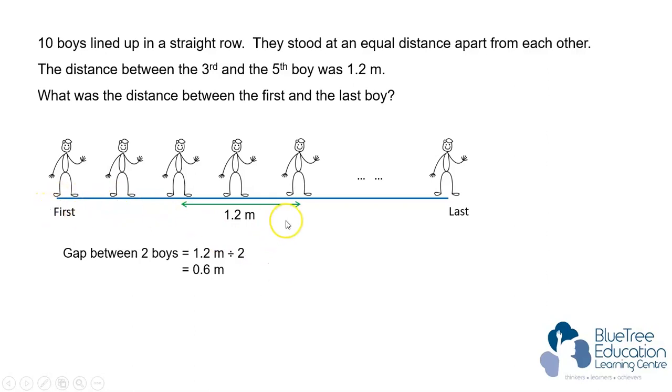And from the first to the last boy, there are ten boys, which means there are nine gaps. To find the distance between the first and the last boy, we will take 9 times 0.6 meters equals to 5.4 meters.